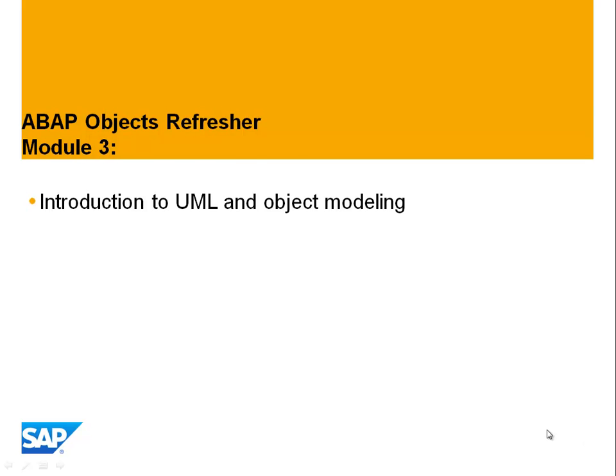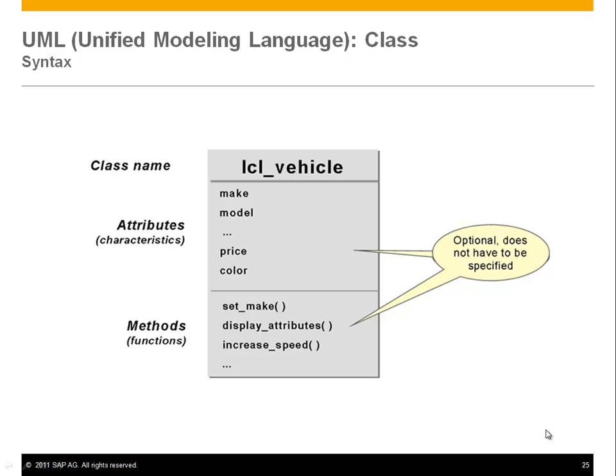That's why we want to look at this briefly. UML is a very rich modeling language with all kinds of things, but we only need a few aspects here. First of all, the simplest thing is the class symbol — the class box.